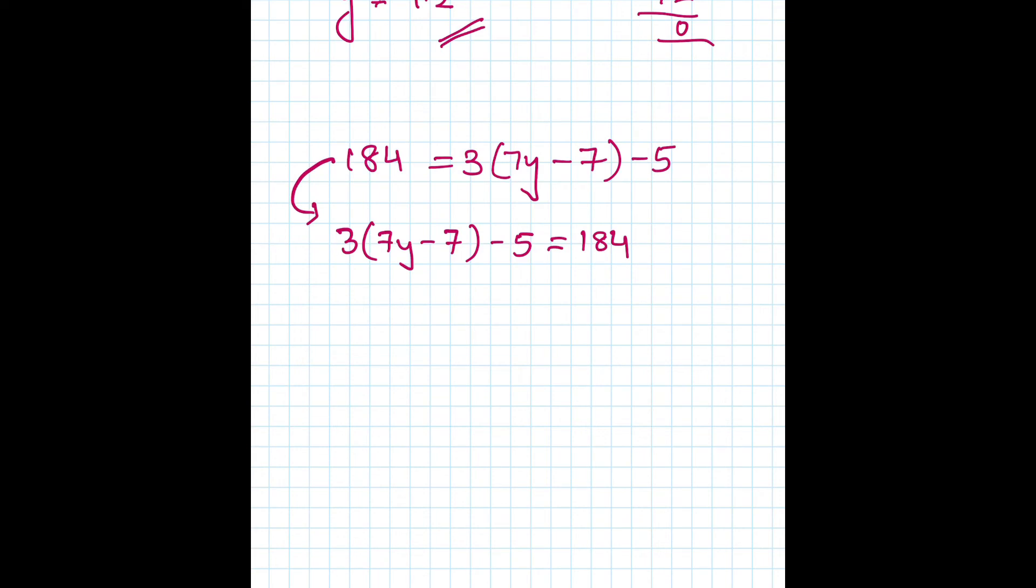So let's open the bracket first. 3 times 7 is 21, so 21y. Again 3 times 7 is 21, minus 5 equals 184. Solve the numbers first, so we have 21y minus 21 minus 5, minus 26 equals 184.